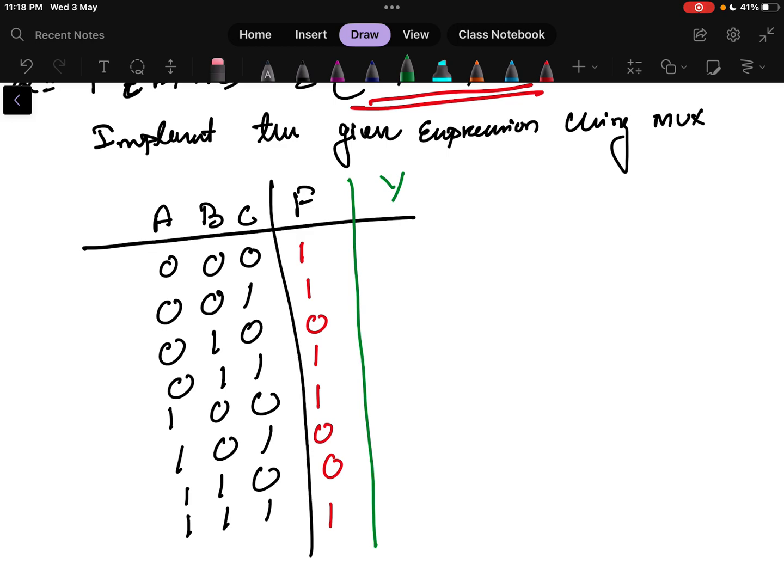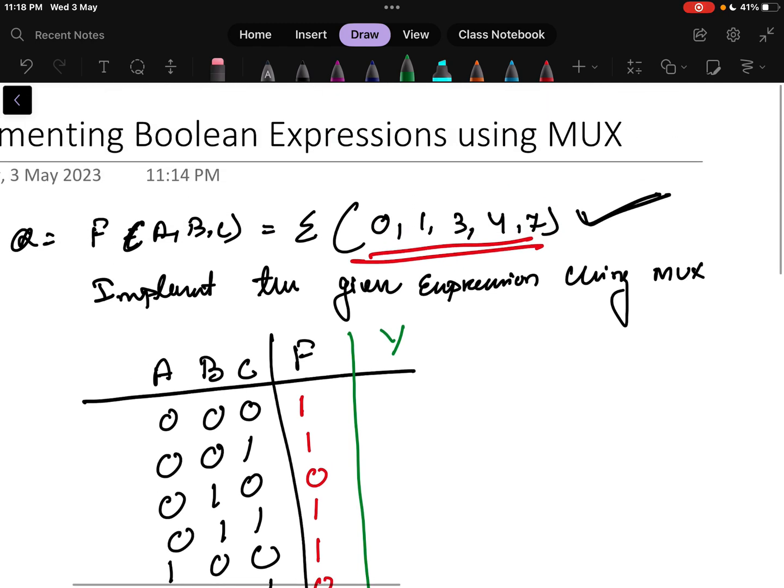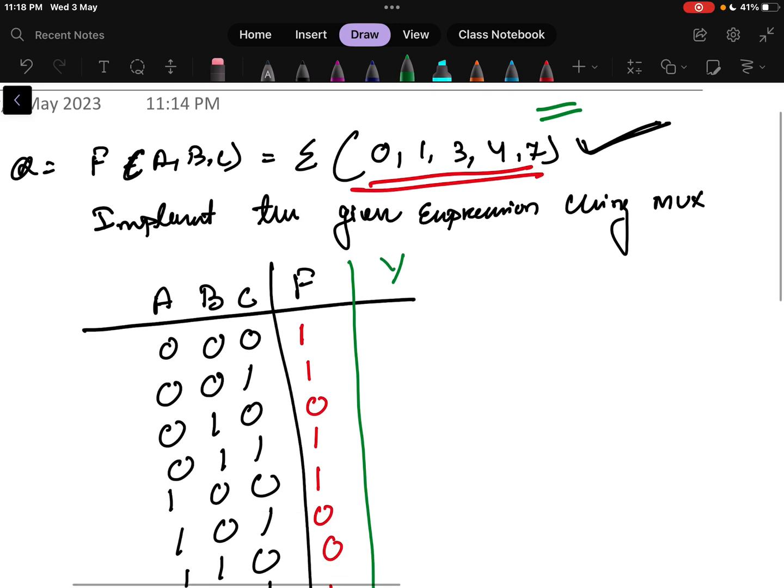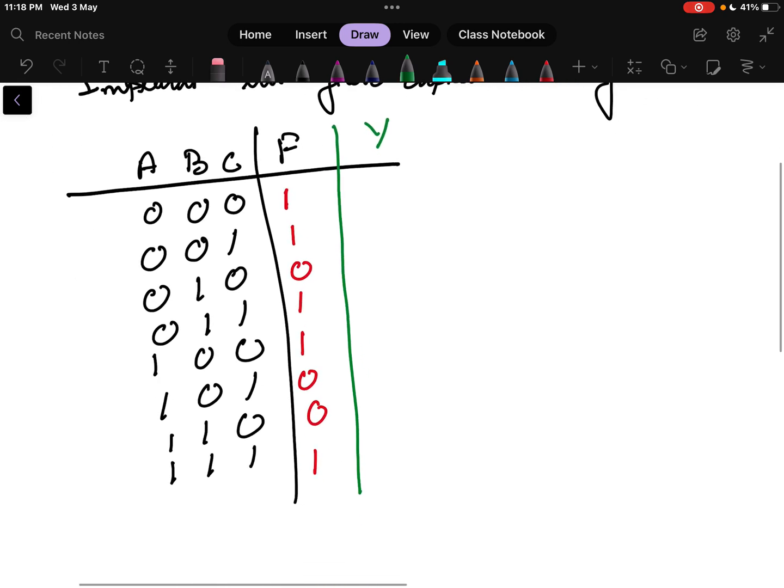There is one way first we will discuss. The first way is if it is not written that using 2x1 multiplexer or 8x1 multiplexer you can use any method. First method is divide this truth table into parts of 2, the truth table I have divided into 4 parts. So here 4 parts means I will write I0, this is one input, I will write I1, I will write I2, and I3.